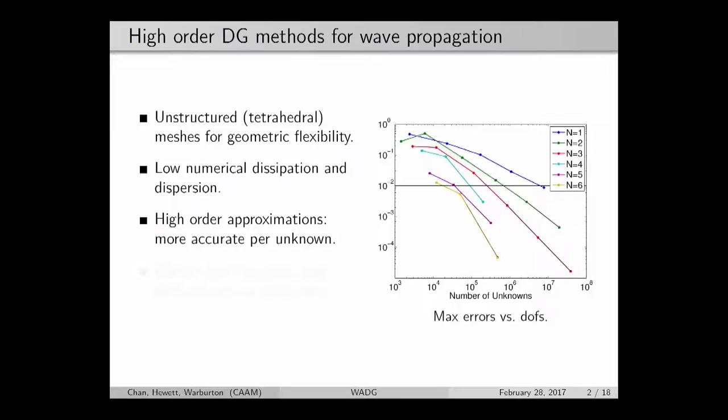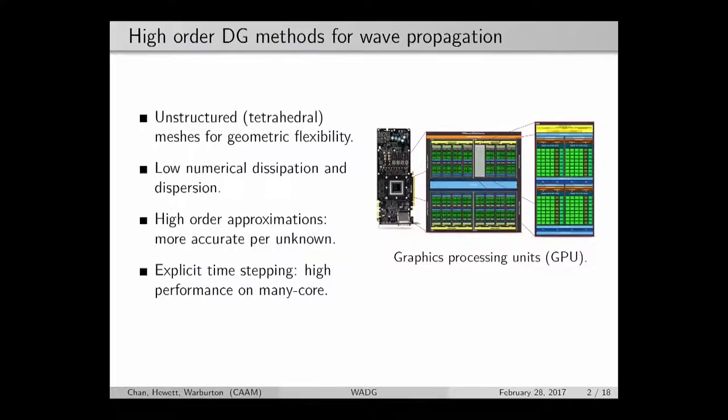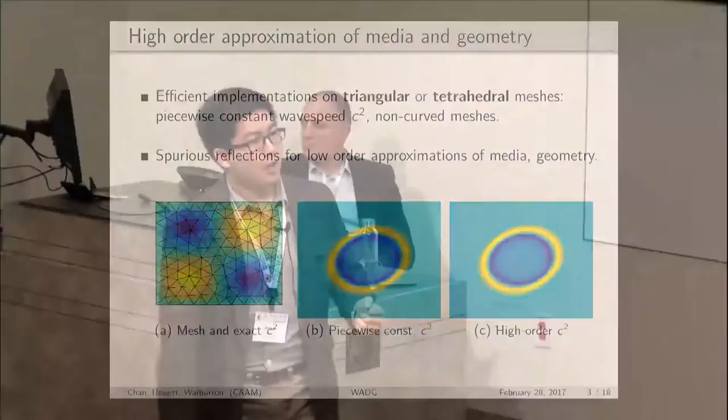Finally, on the HPC side, I'm very interested in working with many-core architectures. My architecture of choice is a graphics processing unit, but the same applies for OpenMP for many-core CPUs or Intel Xeon Phi. If you use explicit time stepping with high order DG methods, you can achieve very high performance on all these architectures.